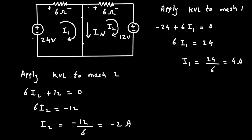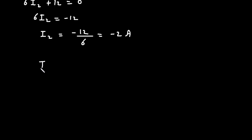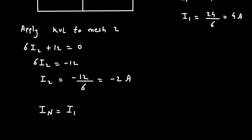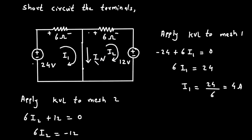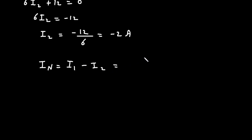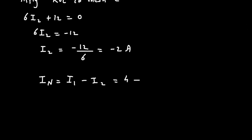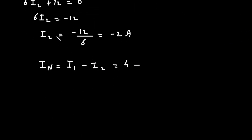Now we got the value of I1 and I2, but we have to find the value of IN. Here we can see this I1 direction and the IN direction are the same, so IN is equal to I1. The direction of I2 is opposite to IN, so it will be I1 minus I2. I1 is 4 ampere, minus the value of I2 which is minus 2, giving us 4 plus 2 equals 6 ampere. Therefore, the value of Norton's current is 6 ampere.